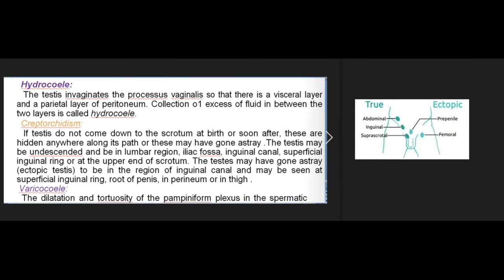Hydrocele: the testis invaginates the processus vaginalis so that there is a visceral and parietal layer of peritoneum; collection of excess fluid between the two layers is called hydrocele. Cryptorchidism: if the testis does not come down to the scrotum at birth or soon after, it may be anywhere along its path — lumbar region, iliac fossa, inguinal canal, superficial inguinal ring, or upper end of scrotum. The testis may also be ectopic — found at the superficial inguinal ring, root of penis, perineum, or in the thigh.